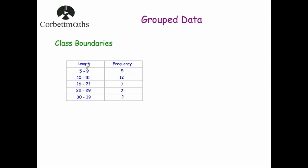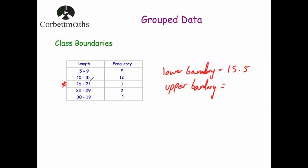The second table is an example where the classes don't touch each other: 5 to 9, then 10 to 15, then 16 to 21. If I choose the middle class, 16 to 21, the lower boundary isn't simply 16. Because the highest value in the class below is 15, the class boundary sits midway between 15 and 16, giving a lower boundary of 15.5. Similarly, since the next class starts at 22, the upper boundary is the midpoint of 21 and 22, which is 21.5.